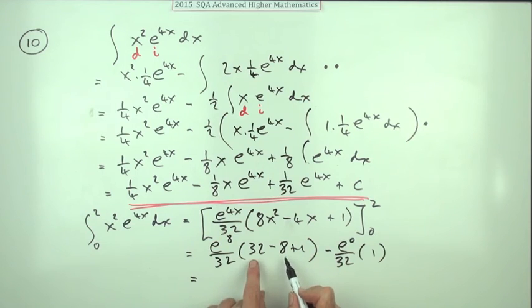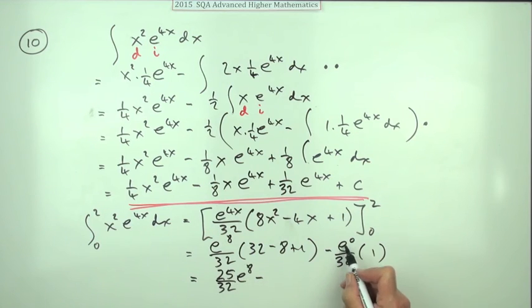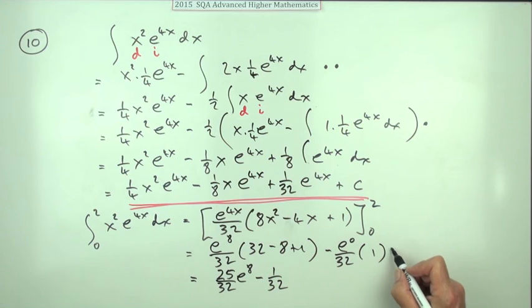So you've got 32. 33 take away 8 is 25. So you've got 25 upon 32 e to the 8. Minus. And that's just 1 over 32. Now putting the fourth mark here.